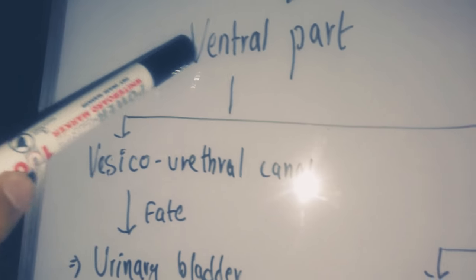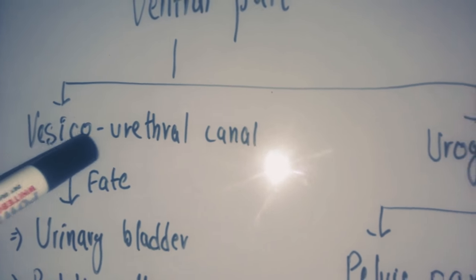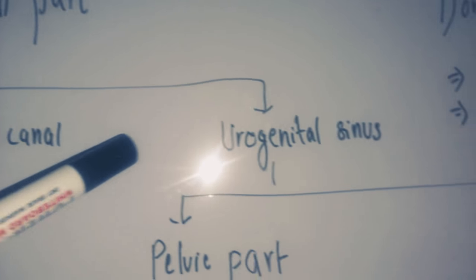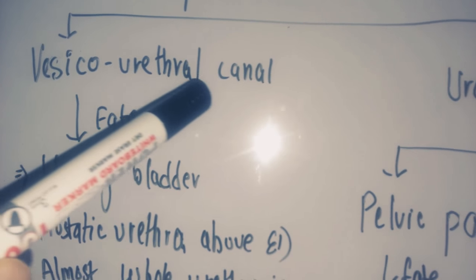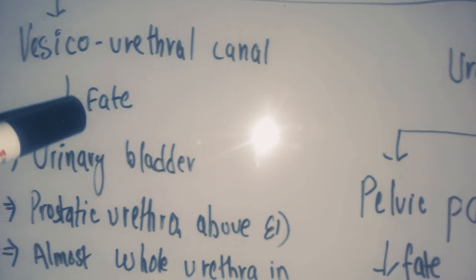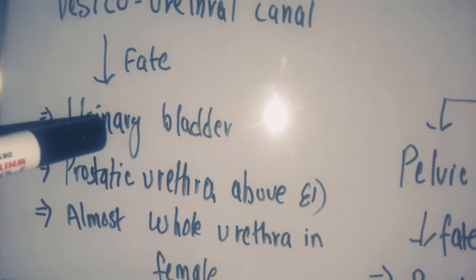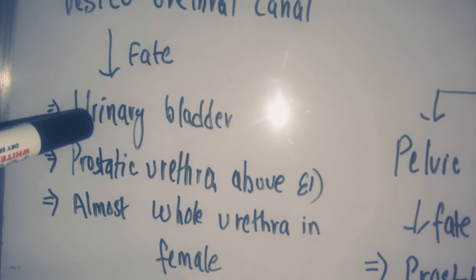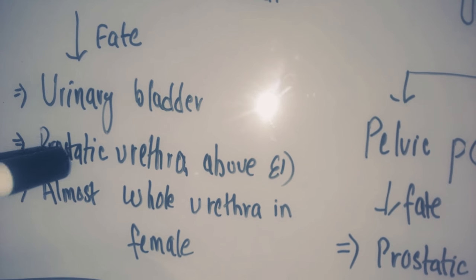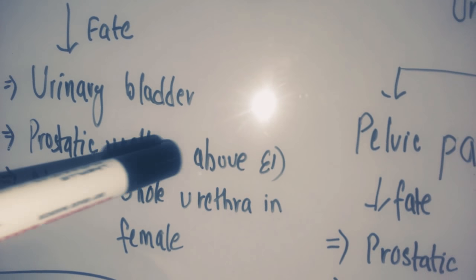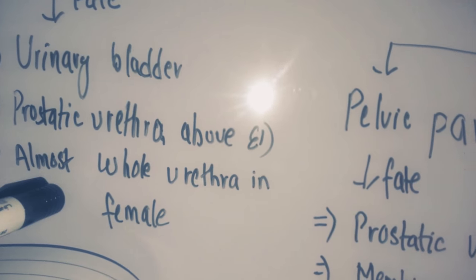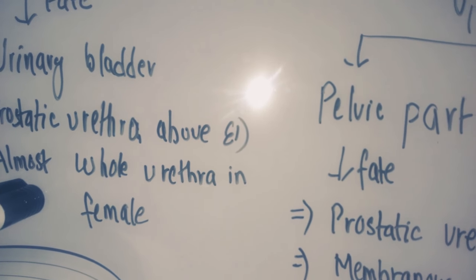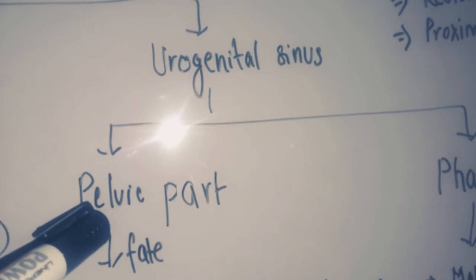The ventral part develops into the vesicourethral canal and the urogenital sinus. The vesicourethral canal develops into the urinary bladder, the prostatic part of the urethra above the ejaculatory duct, and almost all of the urethra in the female.